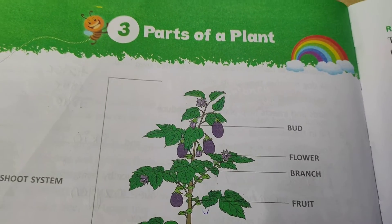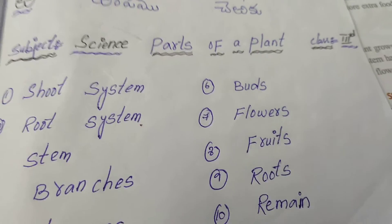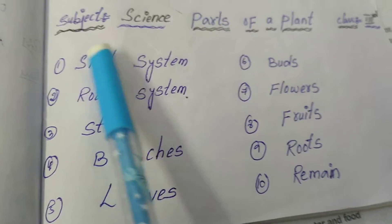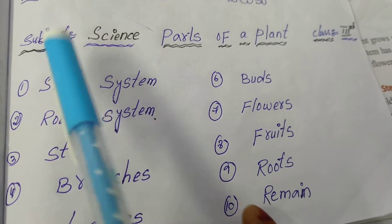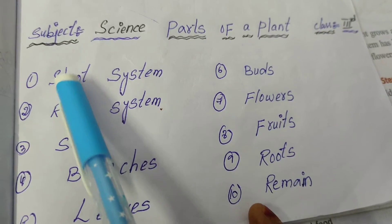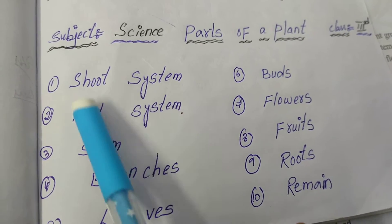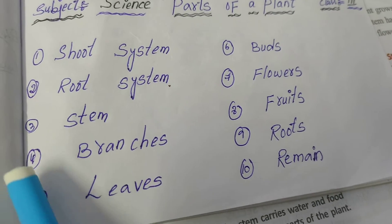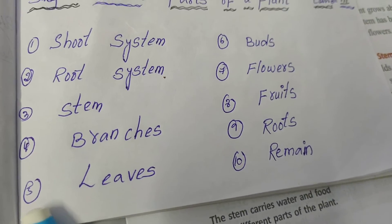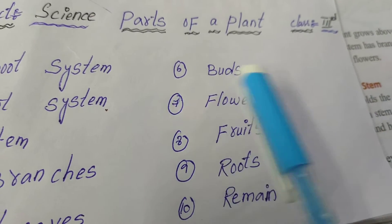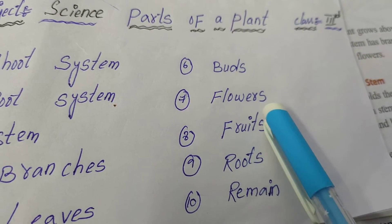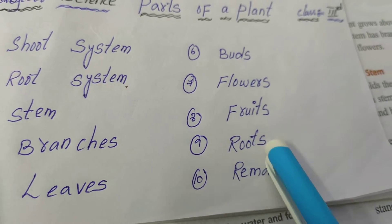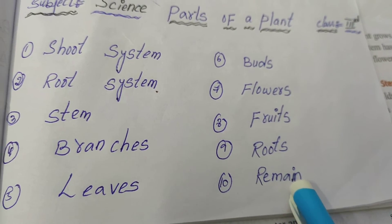Today's homework is only hard words. Write the hard words from parts of a plant: first, shoot system; second, root system; third, stem; fourth, branches; fifth, leaves; sixth, buds; seventh, flower; eighth, fruit; ninth, root; tenth, remain.